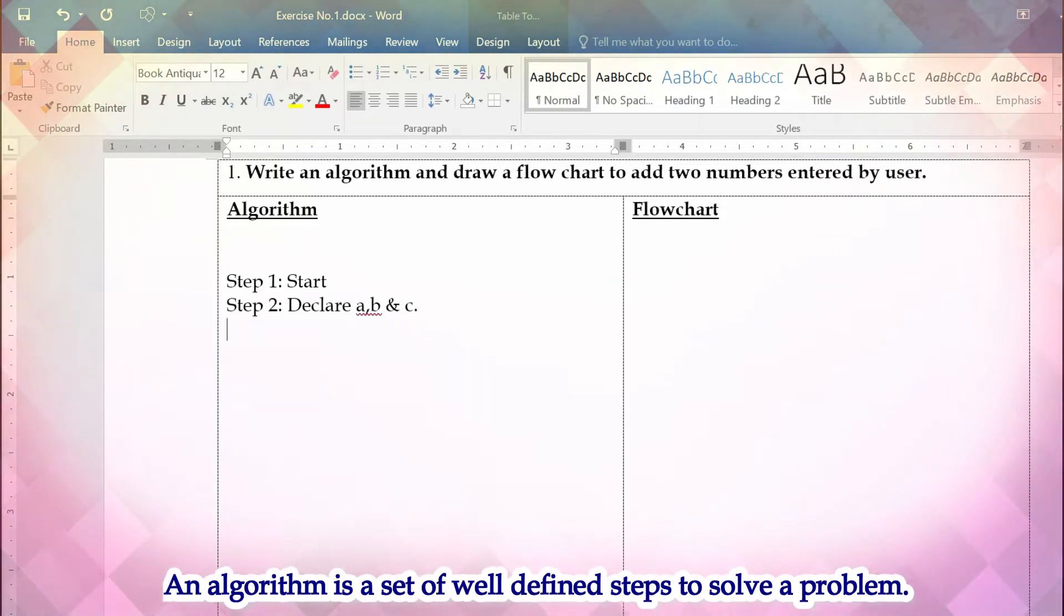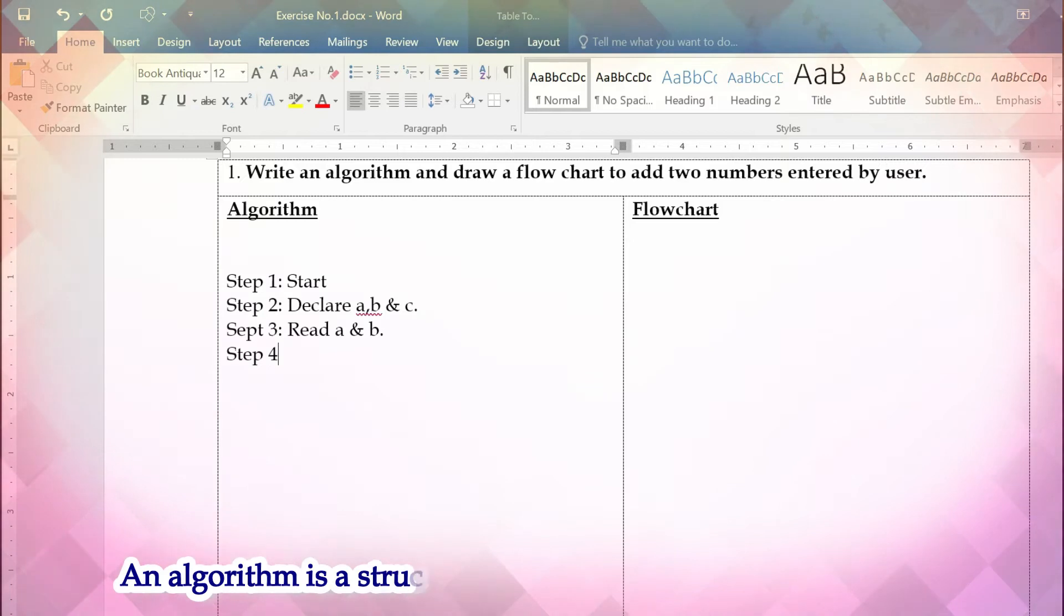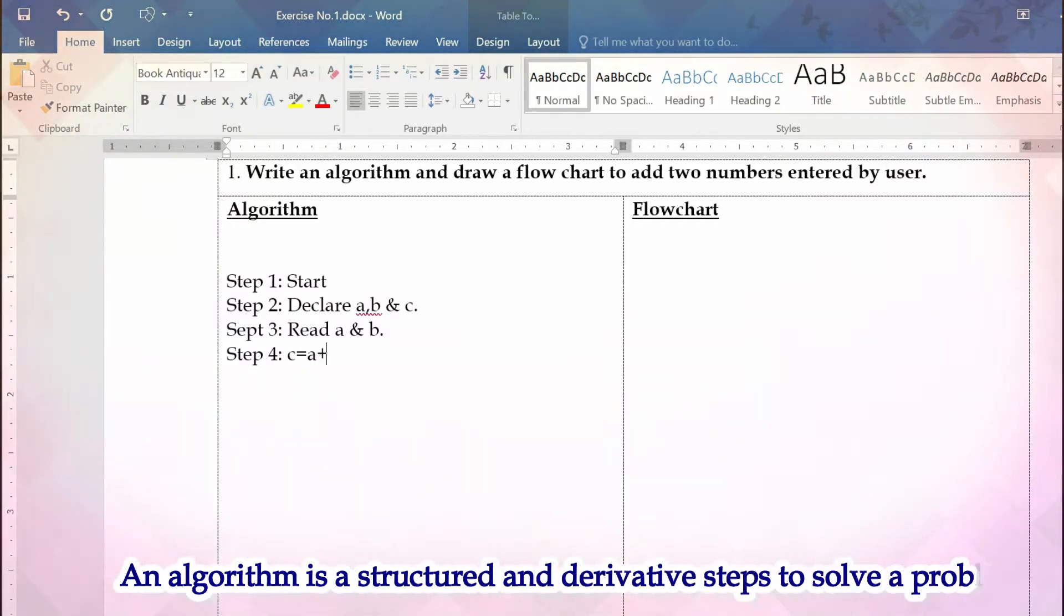Now step three, you want to read the values for a and b. Once values are available we want to do the calculation. Step four: c equal to a plus b.